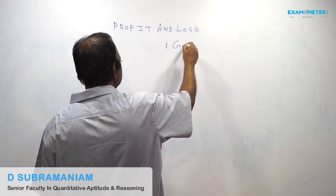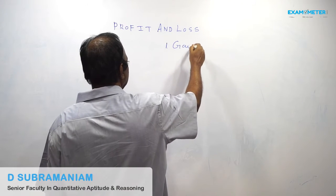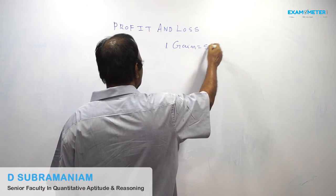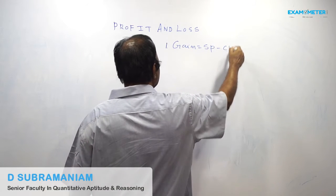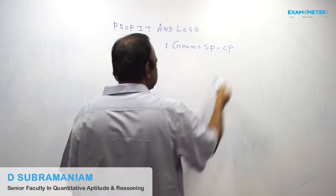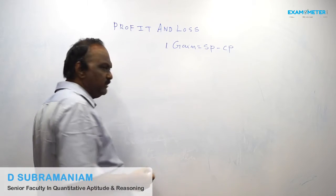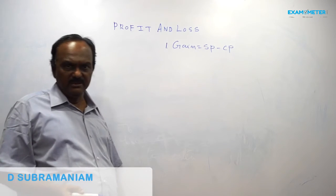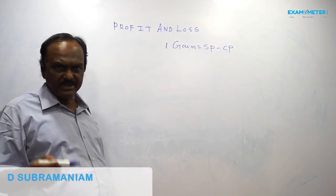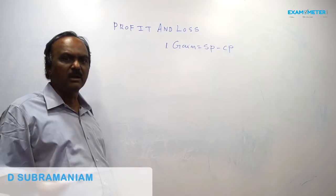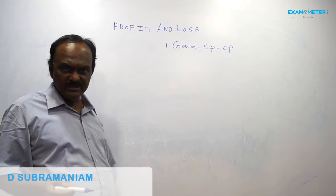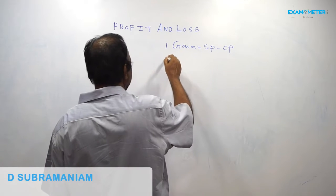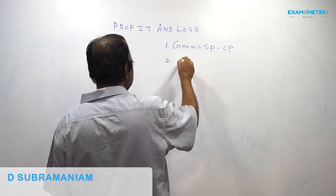First point: Gain is equal to Selling Price minus Cost Price. SP stands for Selling Price and CP stands for Cost Price. So, Gain = SP − CP.